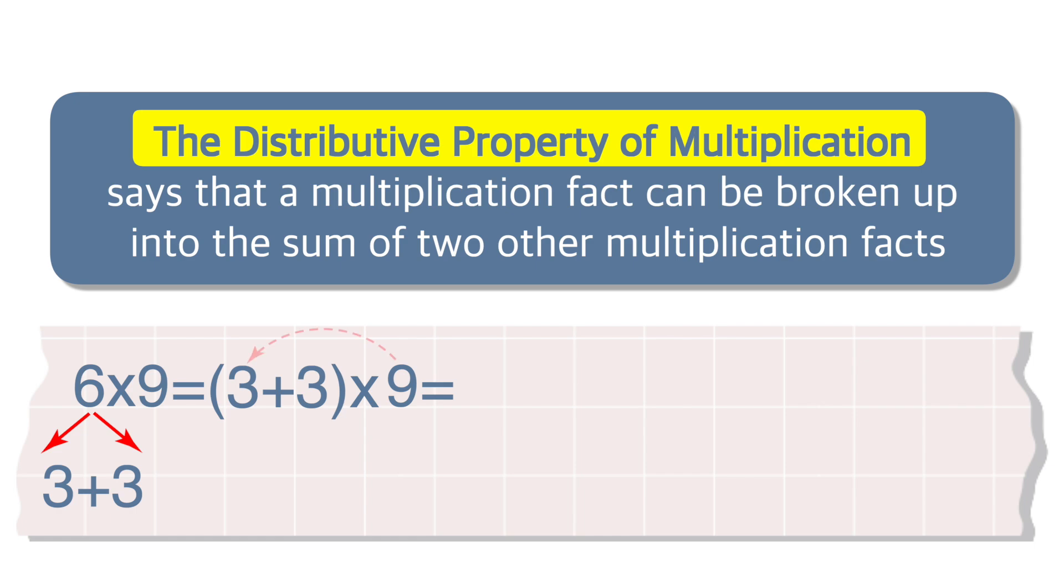Multiply each number inside the parentheses by 9, then add the products. 27 plus 27 equals 54.